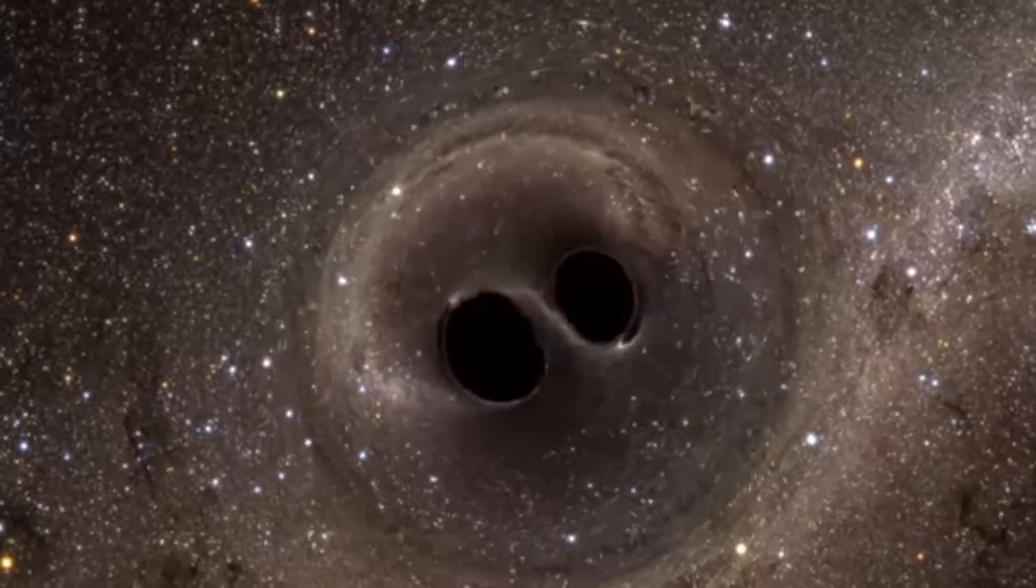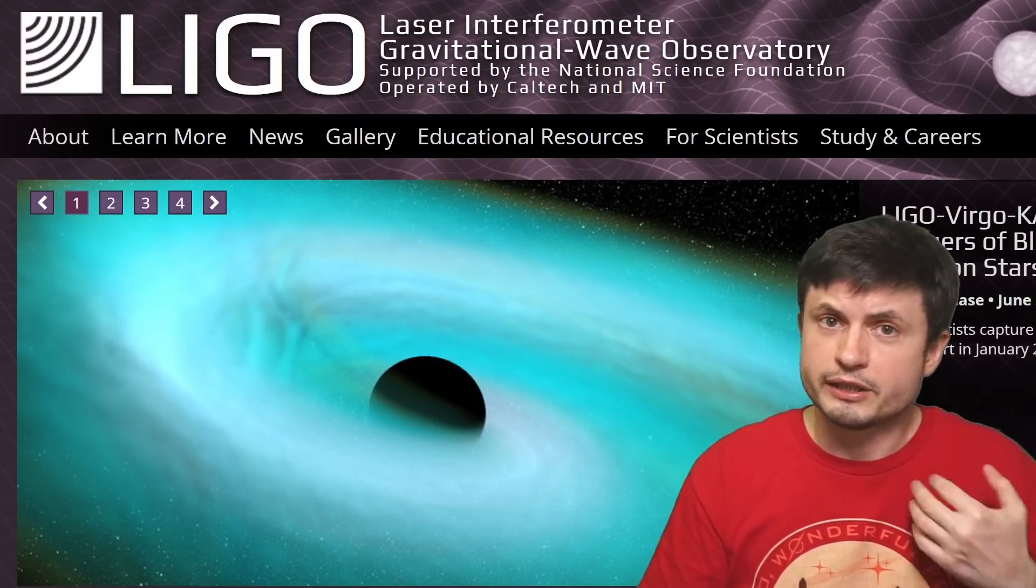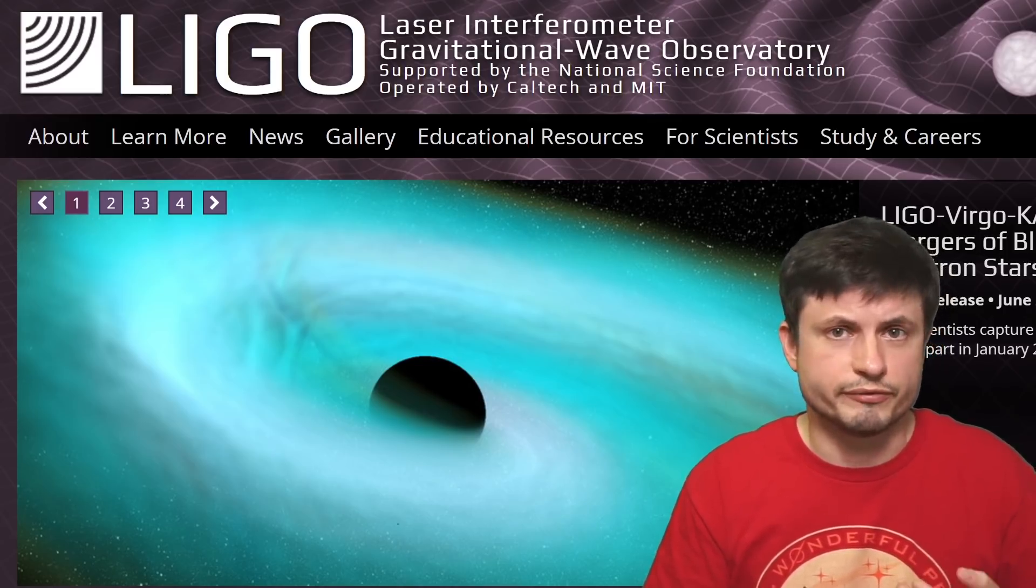This is something we've observed many times with the famous LIGO, the Laser Interferometer Gravitational Wave Observatory, that detected many of these black hole collisions in the last few years since 2015. But all of these collisions to date were only of these smaller black holes, black holes that are generally less massive than approximately 100 masses of the Sun.